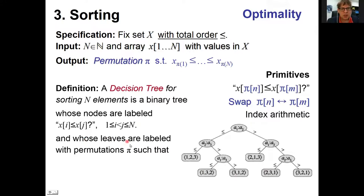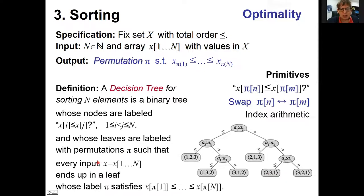Every input ends up in a leaf by walking through the tree: at each node, if X[1] ≤ X[2] proceed left, otherwise right, until reaching a leaf. The leaf's permutation label must sort the input data. Let's verify with the simple case where the input is already sorted: A[1]=1, A[2]=2, A[3]=3. The first comparison finds A[1] ≤ A[2], so we go left; then A[2] ≤ A[3], go left again; arriving at the leaf with the identity permutation, which indeed sorts the already-sorted input.